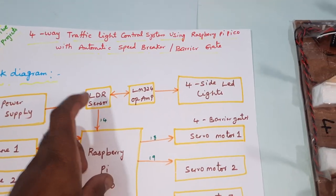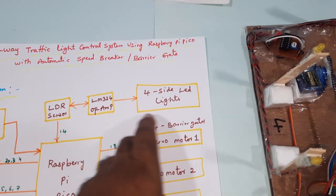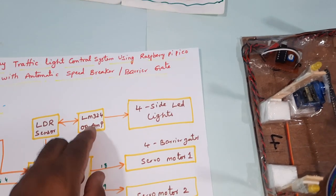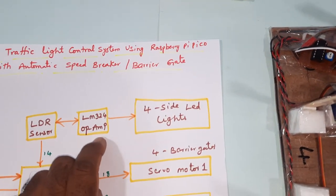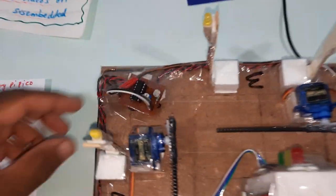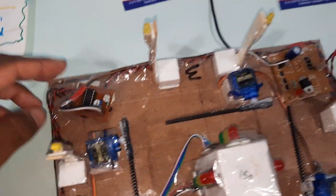There is one LDR sensor for night time - if it is dark all lights should be on, if sunlight is present lights should be off. It's connected to the 14th pin with LM324 operational amplifier for ADC purpose. So here we are using LDR sensor and LM324 operational amplifier.